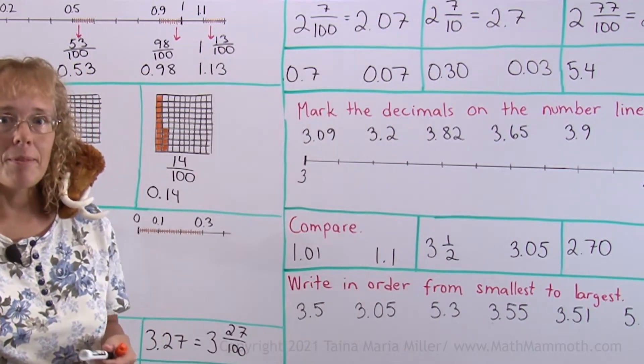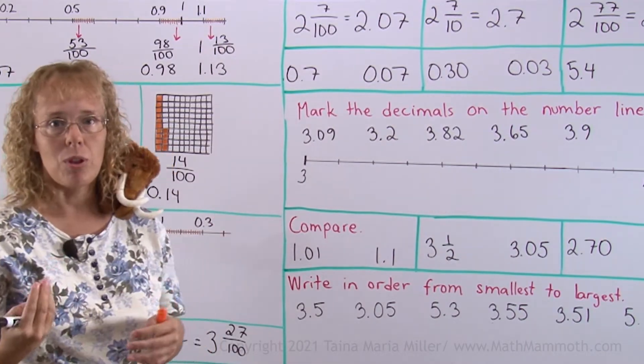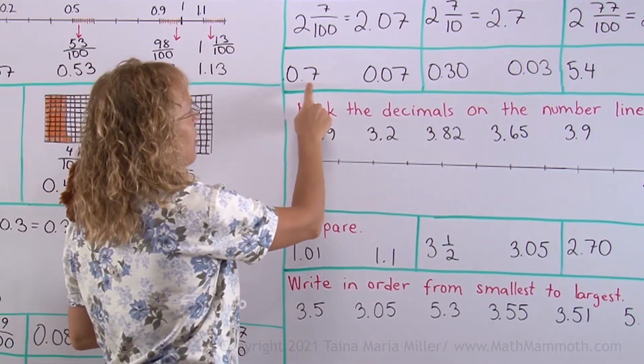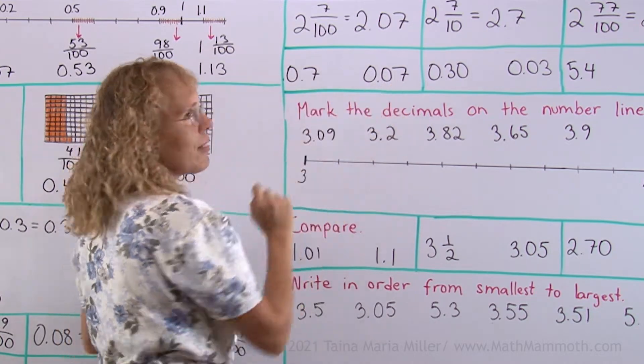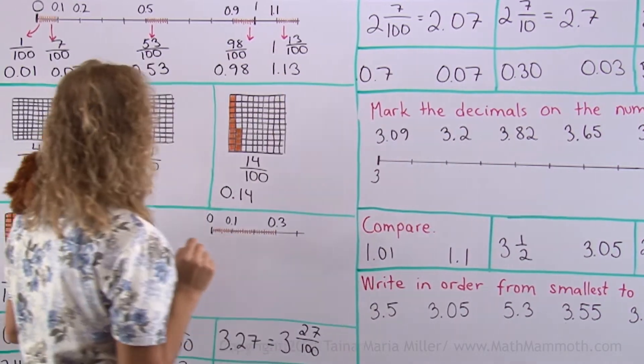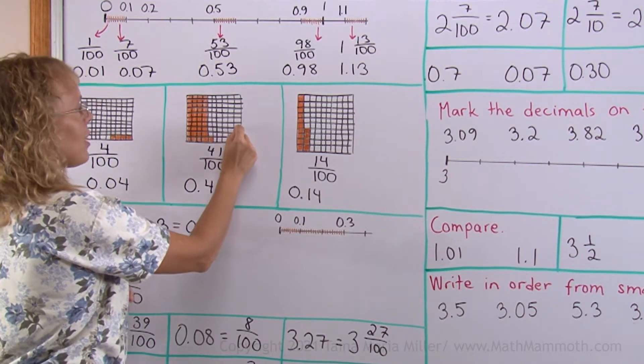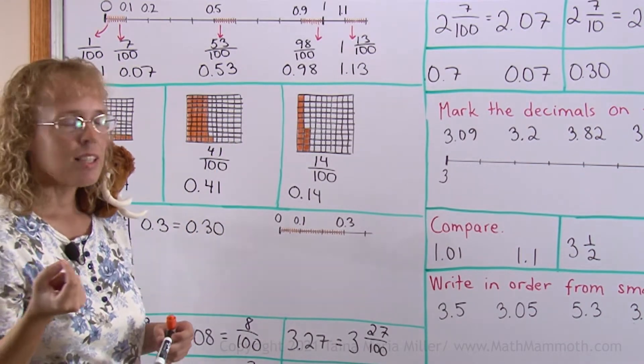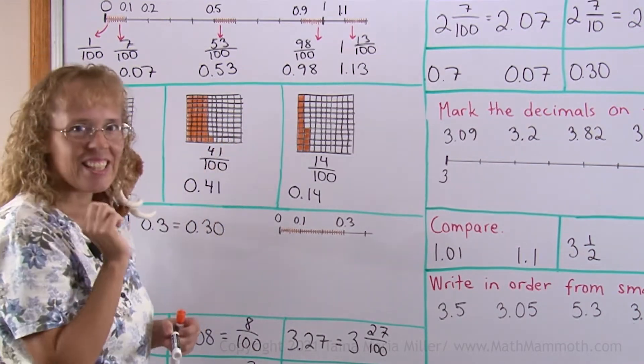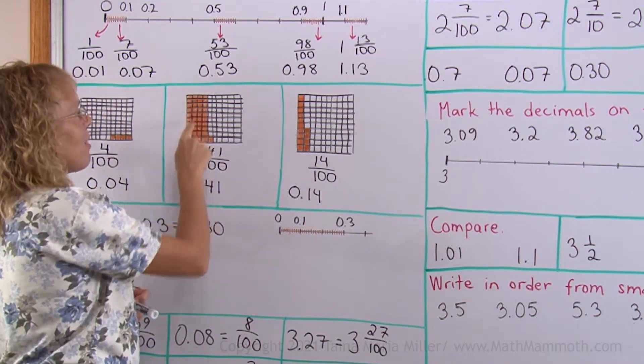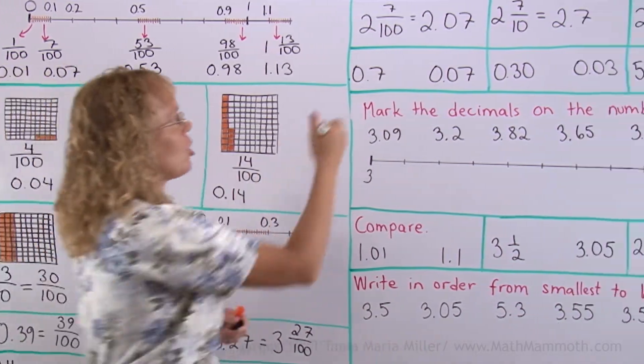Here, let's compare a little. Which number is more? 7 tenths or 7 hundredths? Well, that's an easy question, isn't it? If you colored 7 little pieces here, that would be 7 hundredths. But to color 7 tenths, I would have to color 7 whole columns, so surely that is more.